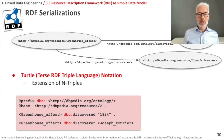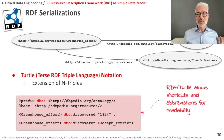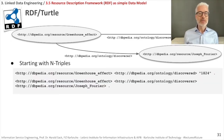RDF Turtle stands for Terse RDF Triple Language. It is an extension of N-Triples, and as you can see it is much shorter — Turtle allows shortcuts and abbreviations for readability. We start from N-Triples and progressively make it shorter.